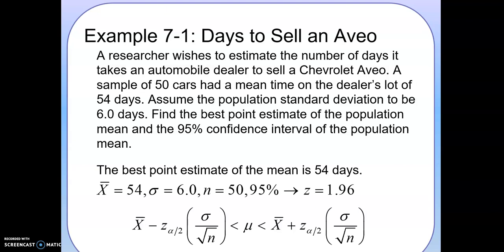Assume the population standard deviation to be six days. Find the best point estimate of the population mean and the 95% confidence interval of the population mean. What we want to find out is how about all the Aveos in the world, how long would it take on average for them to sell, how long do they take usually on the lot. There's no way we can look up every single car in the world. So we're going to use this 50 cars and try to estimate.